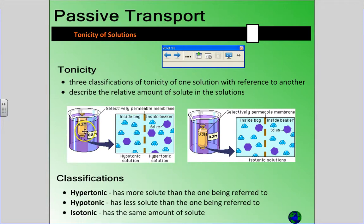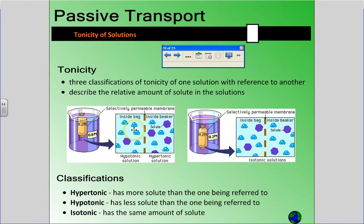Looking at these diagrams, the number — for example 0.2 M — uses a capital M for molarity, which is a measure of how much solute is in the solution. The higher the number, the more solute. So 0.2 molar has less solute than 0.8 molar surrounding it. If you're describing the solution inside the membrane compared to the outside, the one on the left has less solute than the one on the right, so we'd say it's hypotonic to it. Conversely, the one on the right compared to the one on the left would be hypertonic because it has more.